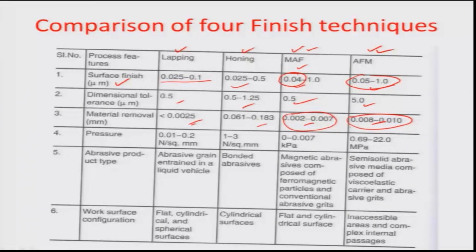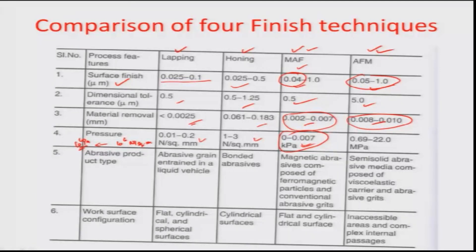Similarly, looking at the pressures deployed on the surface during operation: the conventional processes like lapping and honing work in the range of mega Pascals, whereas a technique like MAF can work at almost a kPa level pressure on the workpiece — much less than lapping or honing. For finish machining, the requirement may be on a surface that may not have high strength — for example, silicon wafers ranging from 300 to 900 microns thickness would struggle to handle mega Pascal pressures, risking shattering.